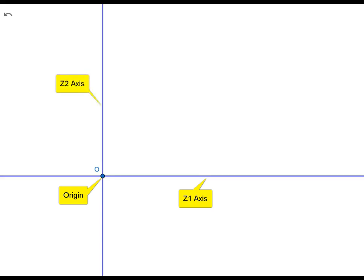Let's start with a two-dimensional space and construct a coordinate system. First we choose a point for the origin. Then we draw a horizontal line through the origin, which we will call the Z1 axis. Then we draw a vertical line through the origin, which we call the Z2 axis.